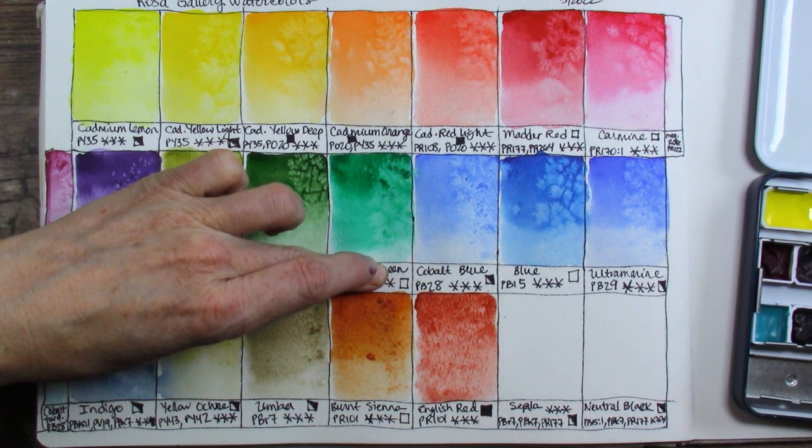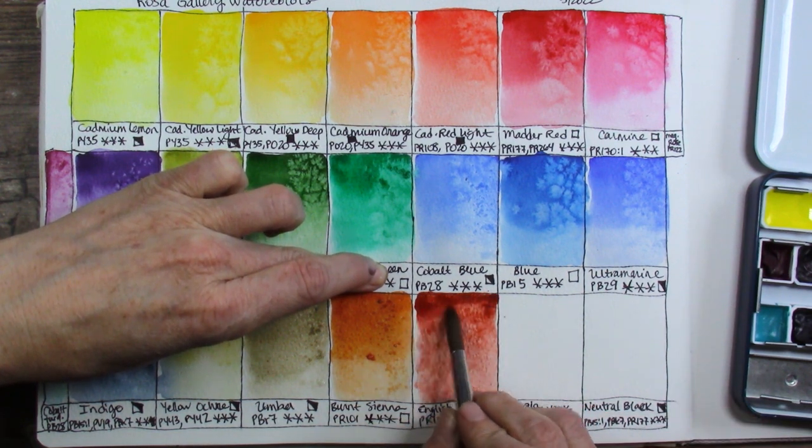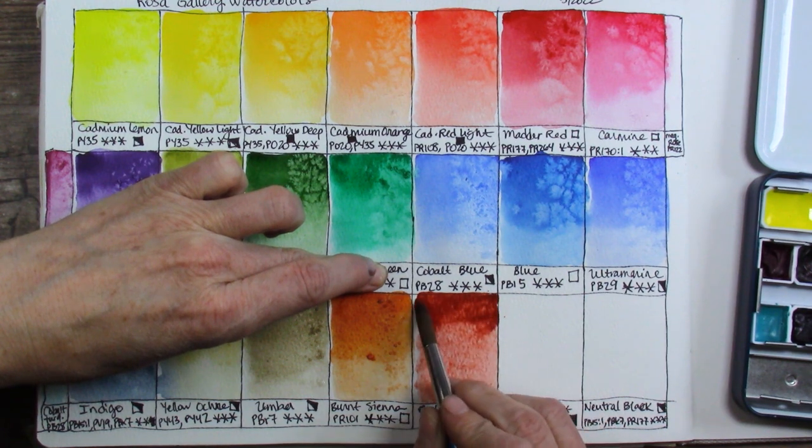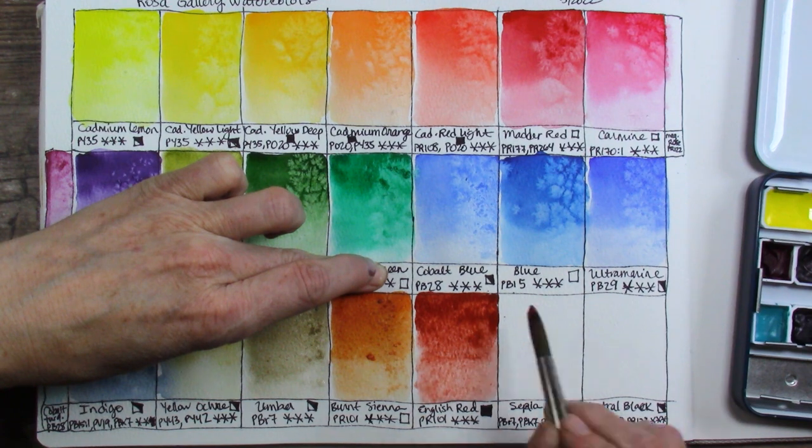English Red is the one there. It's another PR101. You can see it's completely different. Color payout is completely different also. So the layering on that one while wet is not a problem so much. Three star lightfast rating and opaque.